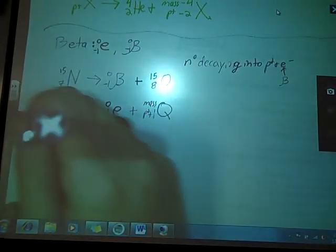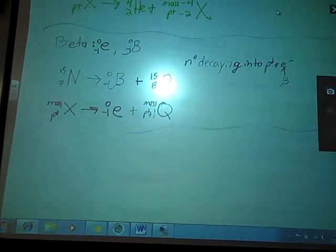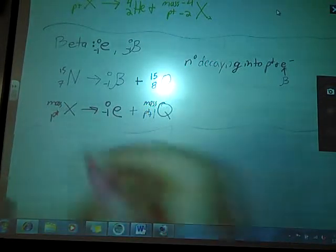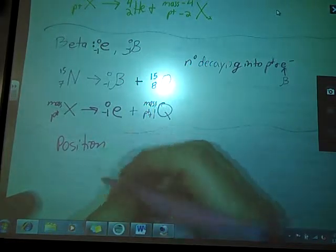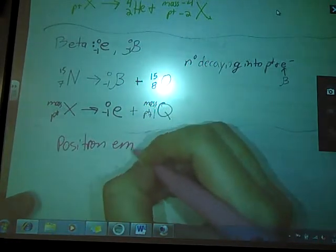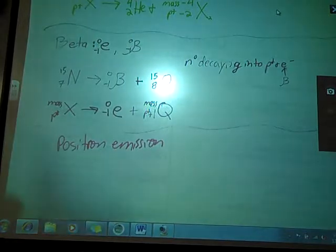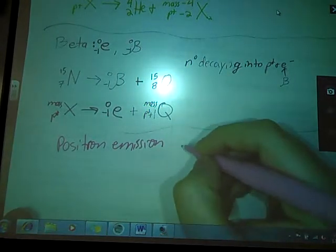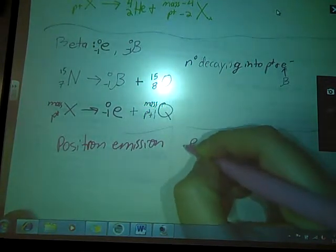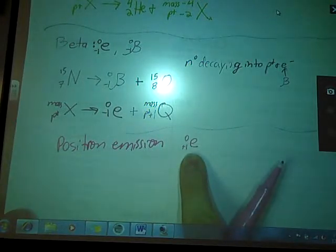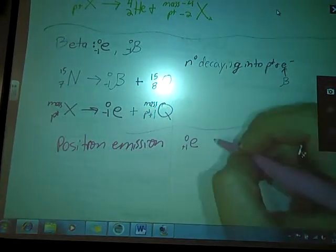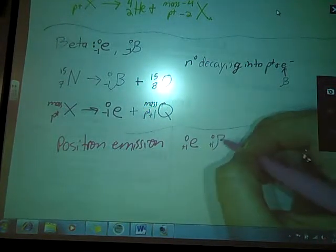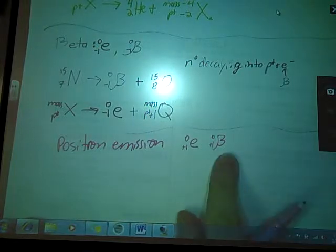The third type of decay that we need to talk about is positron emission. Positron emission, a positron is the close cousin of the beta particle. But instead of a negative charge, this is effectively a positron, an electron with a positive charge. So two ways I can write it with the E or the beta symbol.